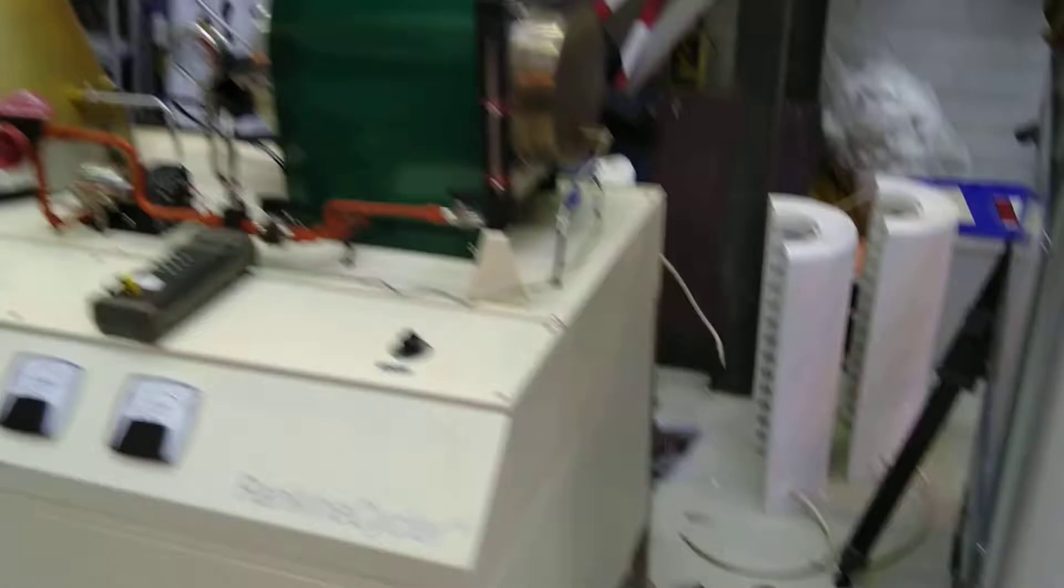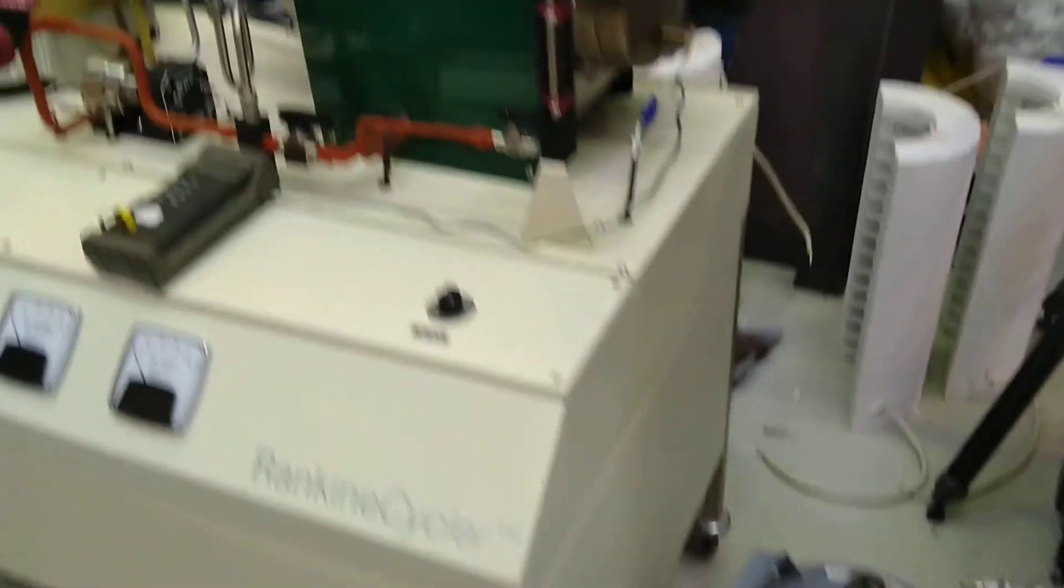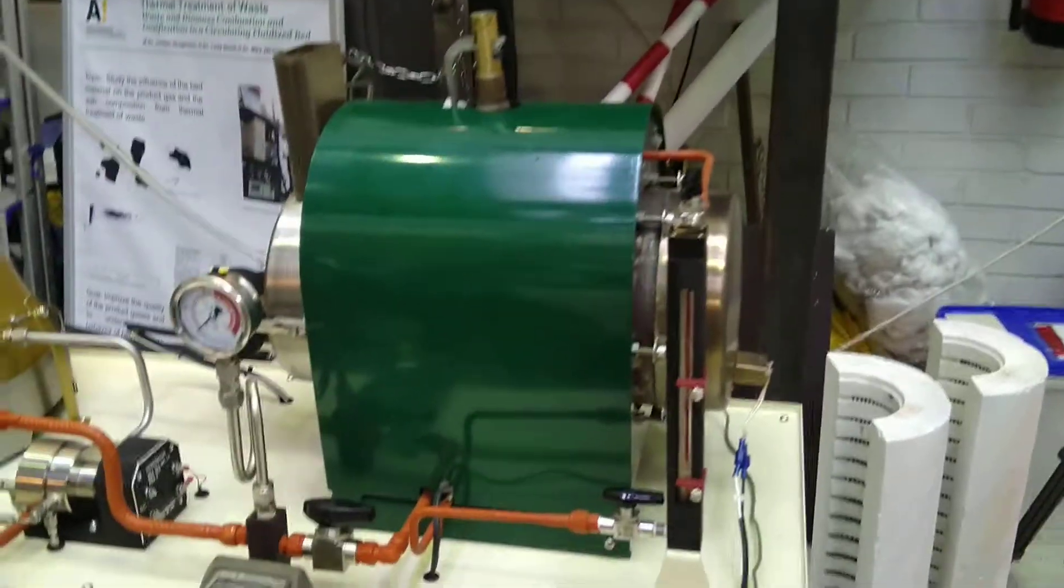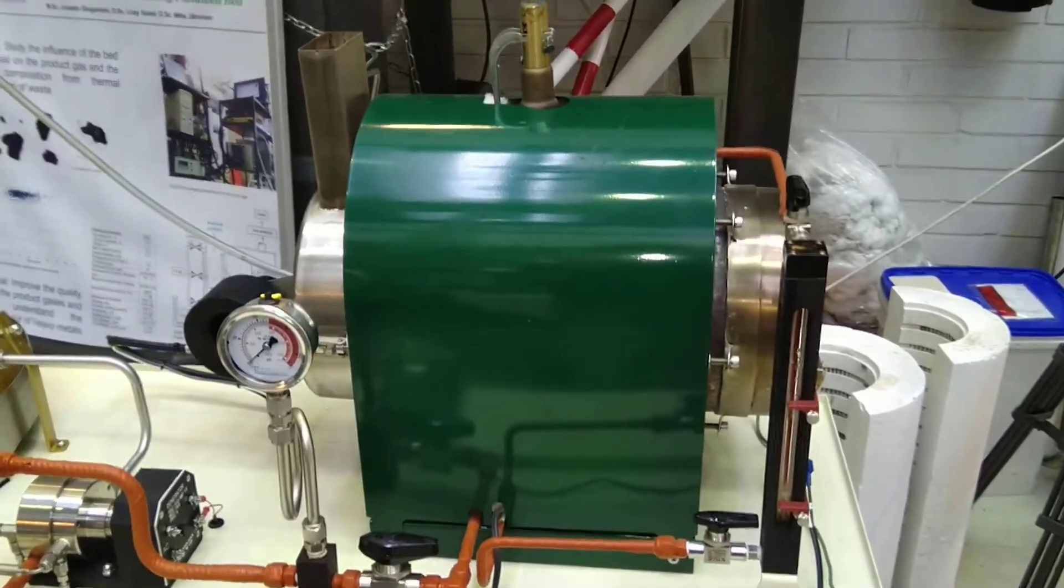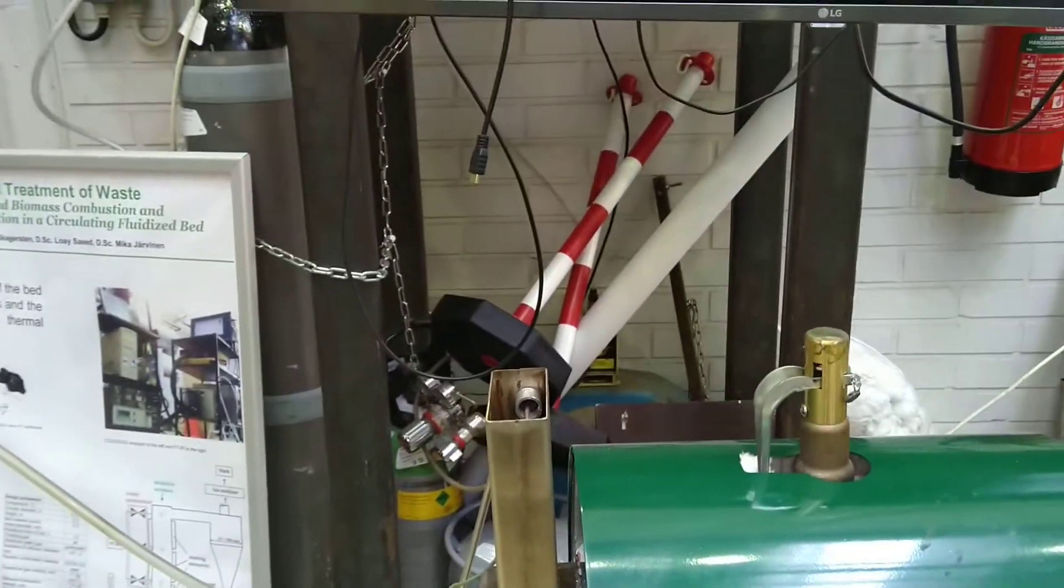The power plant is using propane gas that comes from this container. It goes to the boiler gas boiler, burns there, and flue gases come out from the chimney here.